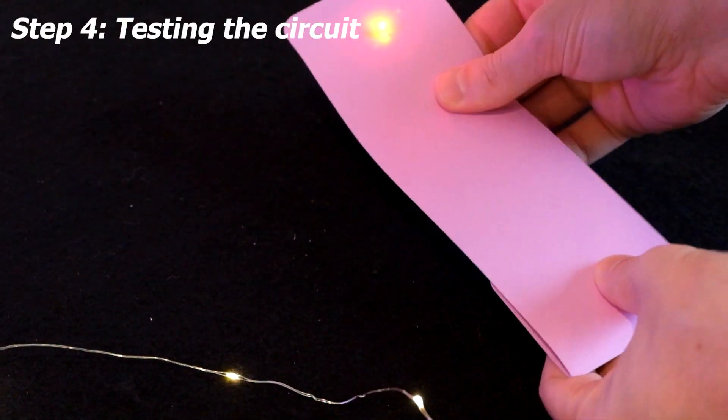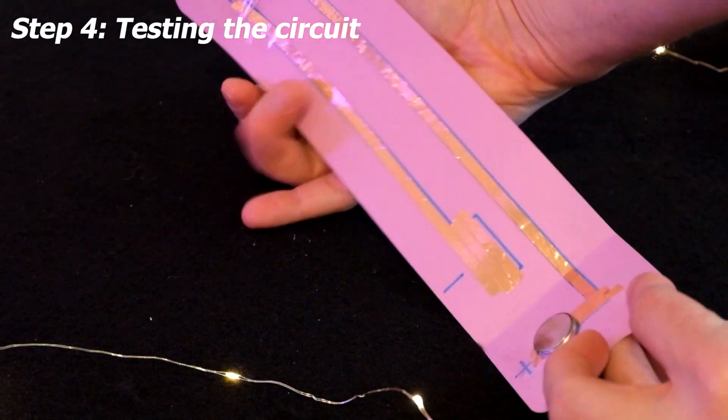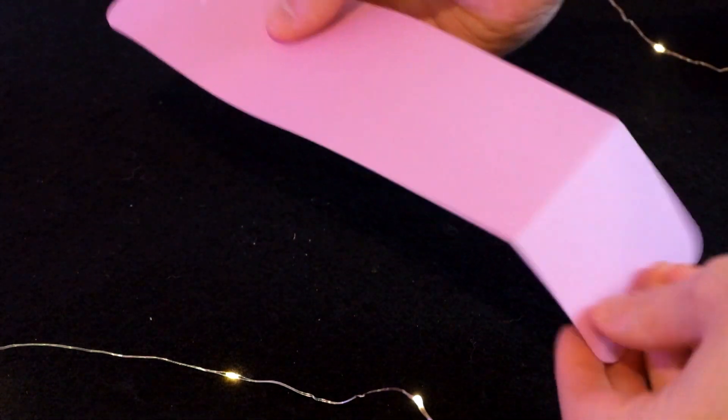Turn the bookmark over and fold it at the pre-folded spot. The LED should light up. Now it's time to decorate the bookmark.